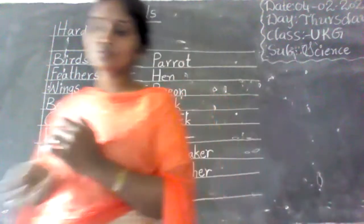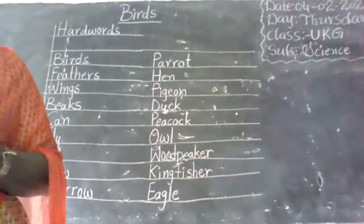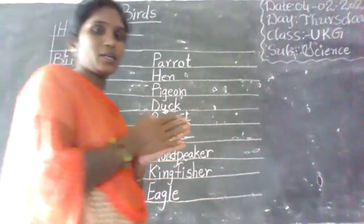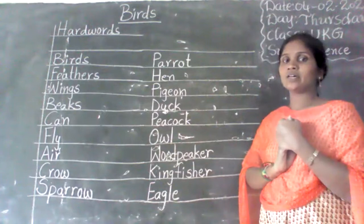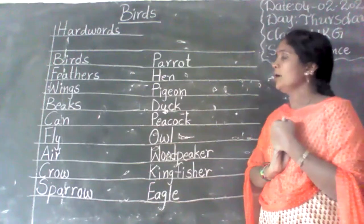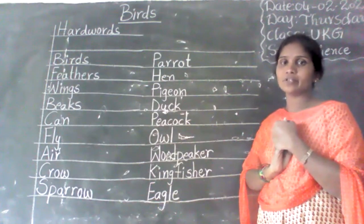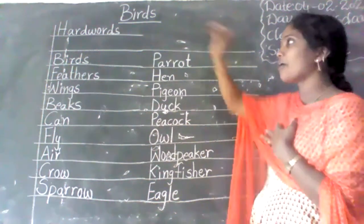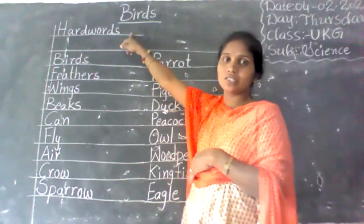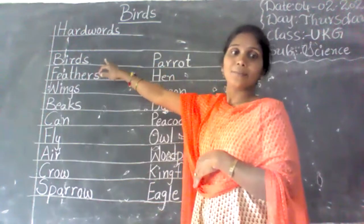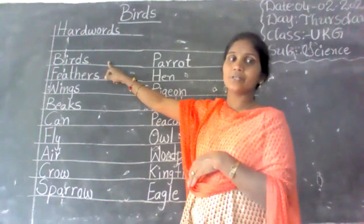I am writing on the board. You also write like this. What is our lesson? Birds — B-I-R-D-S. Hard words. Birds — B-I-R-D-S.